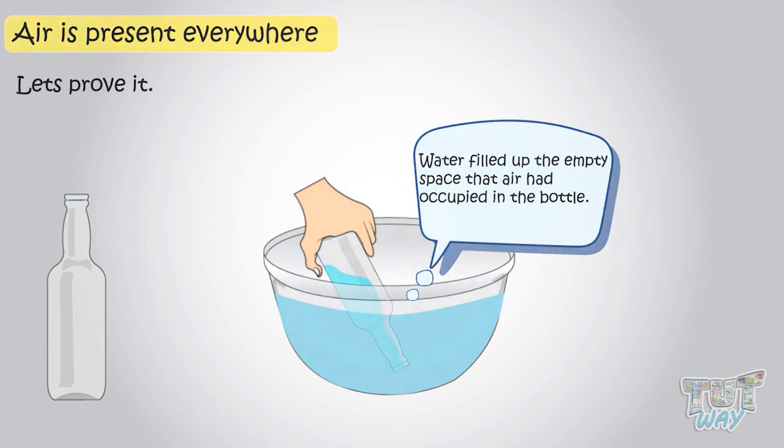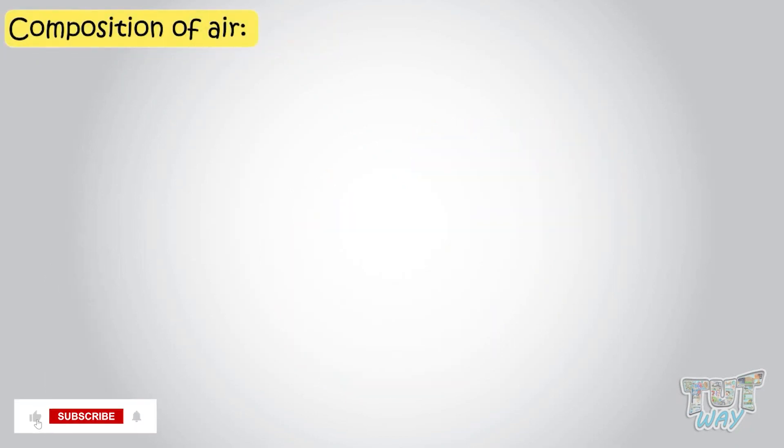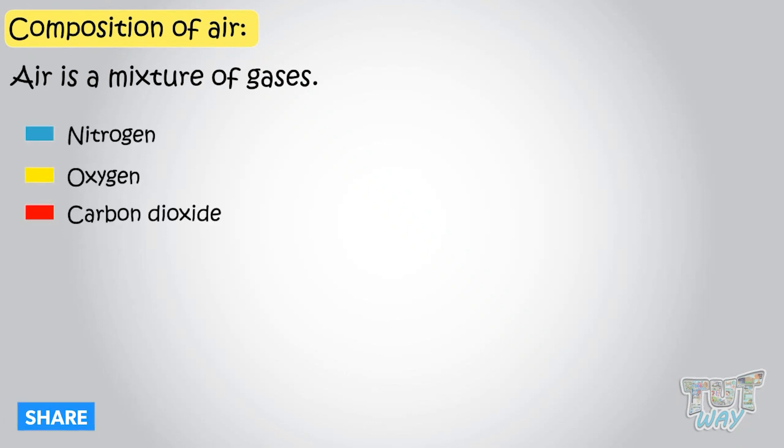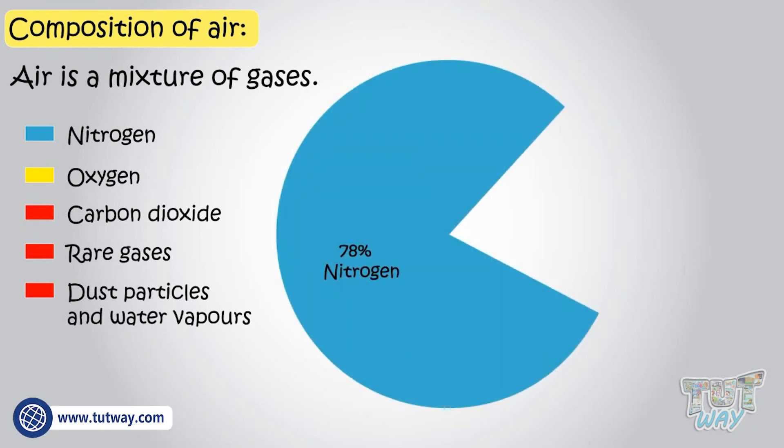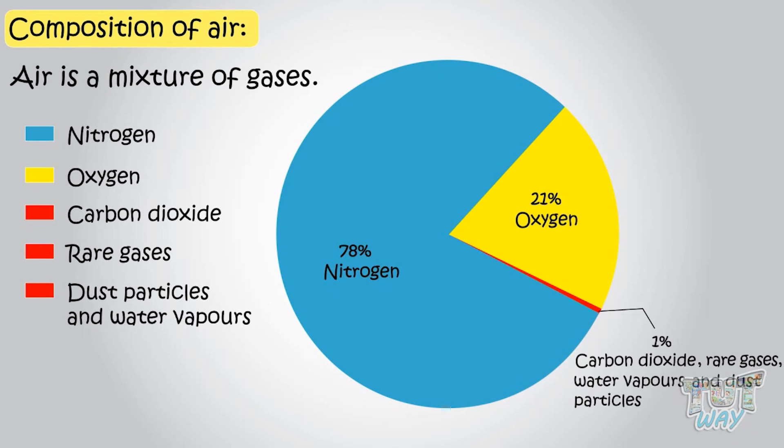Now let's see what is air made up of. Air is a mixture of gases: nitrogen, oxygen, carbon dioxide, some rare gases, dust particles, and water vapors. 78% is nitrogen, 21% oxygen, and 1% includes carbon dioxide, some rare gases, water vapors, and dust particles.